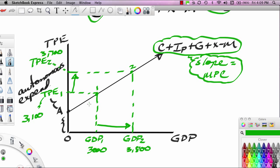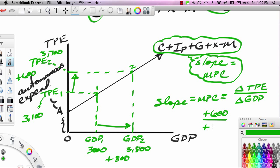What has happened here is GDP has increased by 800. The increase here is 800, but the increase in total planned expenditures is 600. So we can see here that the slope of this line is equal, as we said, to MPC, but MPC in this case is going to be the change in TPE over the change in GDP. TPE increases by 600. GDP increases by 800. So the slope of this particular expenditure line is 0.75.